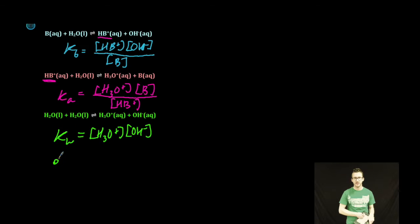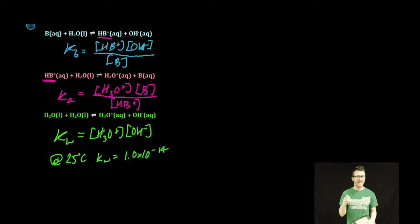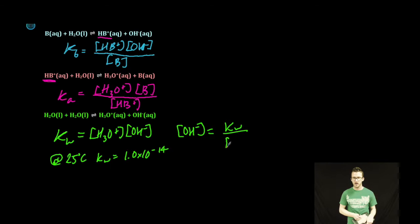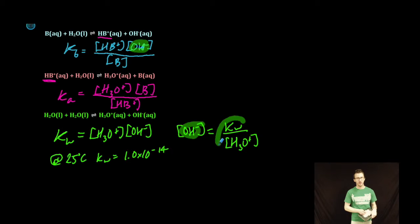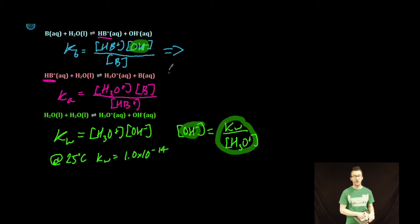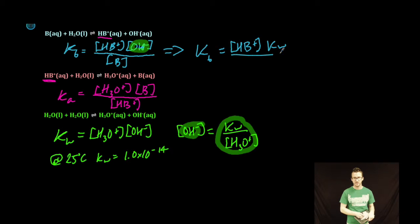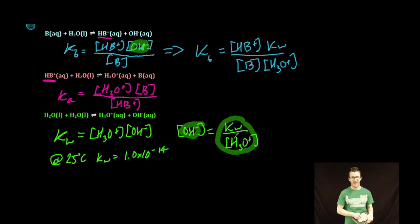At 25 degrees Celsius, Kw equals 1.0 times 10 to the negative 14. To relate Kb, Ka, and Kw, we first solve the Kw equation for hydroxide ion concentration: hydroxide ion concentration equals Kw over hydronium ion concentration. Since the Kb expression contains hydroxide ion concentration, we substitute this relationship in — so Kb equals the concentration of conjugate acid HB+ times Kw, over the concentration of the original base times hydronium ion concentration.